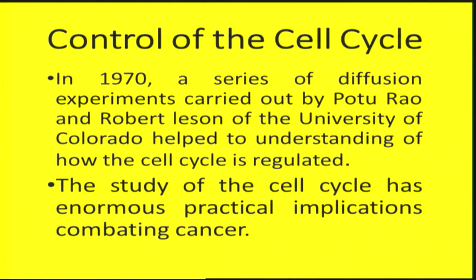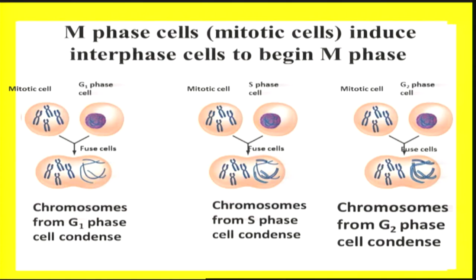It was Pottu Rao and Robert Lessen from the University of Colorado who conducted cell fusion experiments to study the cell cycle, and the study of this cell cycle had enormous practical implications to combat cancer. When M phase cells were fused with interphase cells or other stages, they brought about changes characteristic of that particular stage. For example, chromosomes from G1 phase started condensation when fused with metaphase cells.